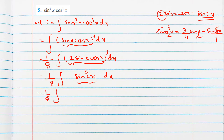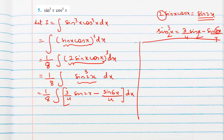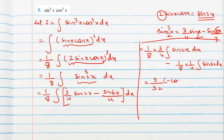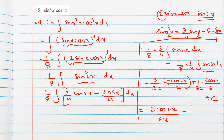So the integral becomes (1/8)∫(3sin2x/4 − sin6x/4) dx. Separating: (3/32)∫sin2x dx − (1/32)∫sin6x dx. The integral of sin2x is −cos2x/2 and sin6x is −cos6x/6, giving the final answer: −3cos2x/64 + cos6x/192 + C.